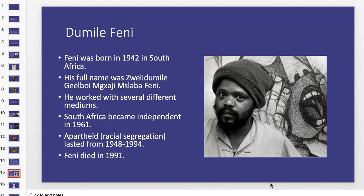Our first African artist is Dumile Feni, born in 1942 in South Africa. He worked in several different mediums — really a craftsman who tried to expand his abilities. South Africa became independent in 1961, but they still dealt with apartheid: racial segregation that was legal from 1948 to 1994. This meant people could be separated on buses and there were rules against interracial marriage that lasted until 1994 — really an awful thing, and there are plenty of people alive today who grew up under those rules. Feni died in 1991, so he didn't get to see the end of apartheid, but it definitely influenced his work.